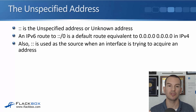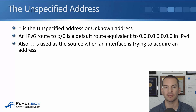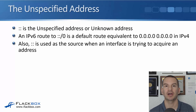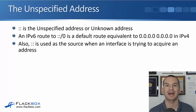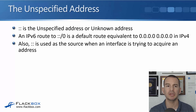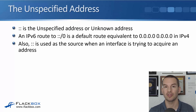When a host is using SLAAC, it's going to send traffic out using a source address of :: (the unspecified address) until it gets its normal IPv6 address. Because :: is unspecified or unknown, it's also used for our default static routes as well. So if you do an IPv6 route to ::/0, that's equivalent to a route to 0.0.0.0/0 — the default route in IPv4.